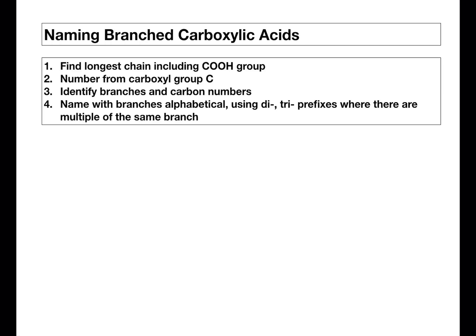Let's have a quick recap of the rules for naming branched chain carboxylic acids. The first rule is to find the longest chain which includes the carboxyl group. Then number that chain from that carboxyl group carbon. Identify your branches and their corresponding carbon numbers. And then name with the branches alphabetical using di and tri prefixes where there are multiples of the same branch.